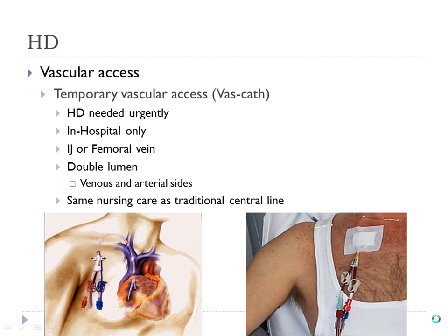The VASCAP has to be in a very, very large vein. It's placed in the femoral or the IJ — it can be placed in the subclavian as well. But the best place to put it is the IJ.